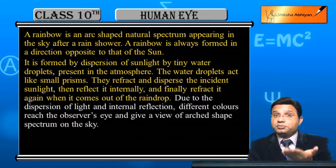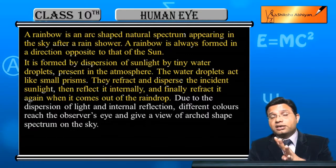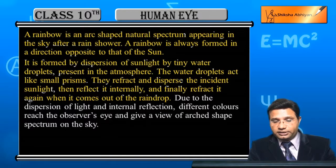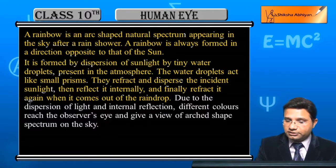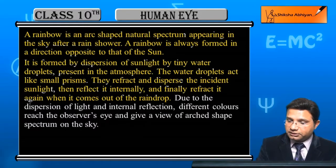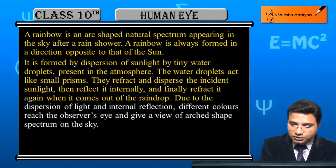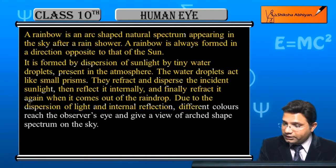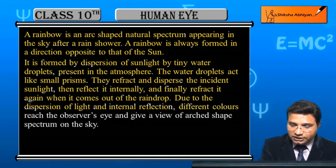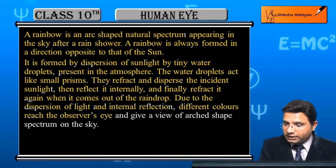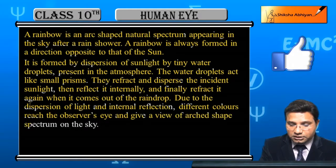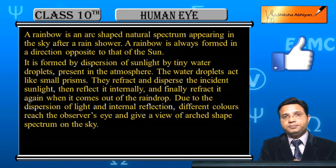Together with dispersion, that makes four types of processes involved. Due to the dispersion of light and internal reflection, different colors reach the observer's eye and give a view of the arc-shaped spectrum in the sky.